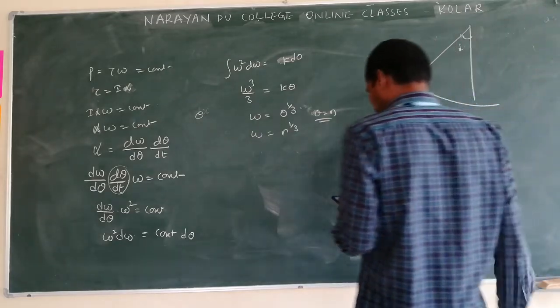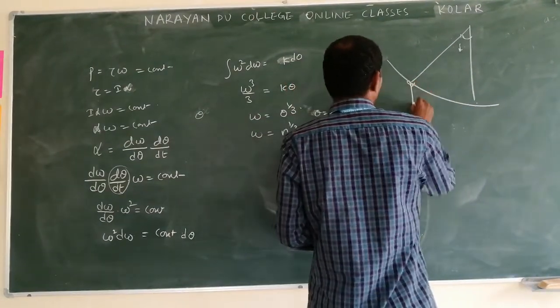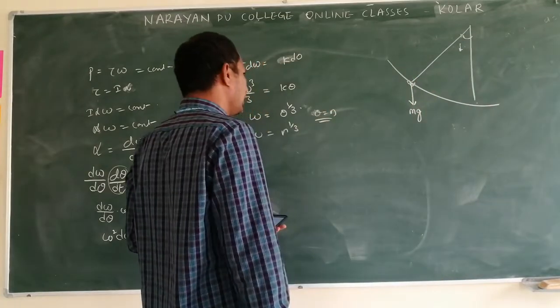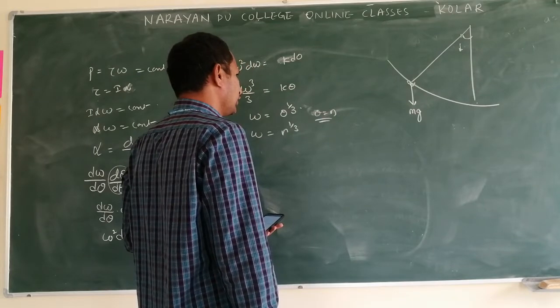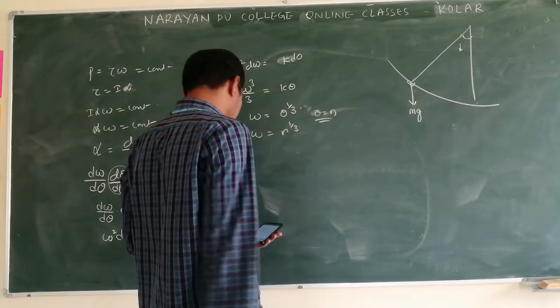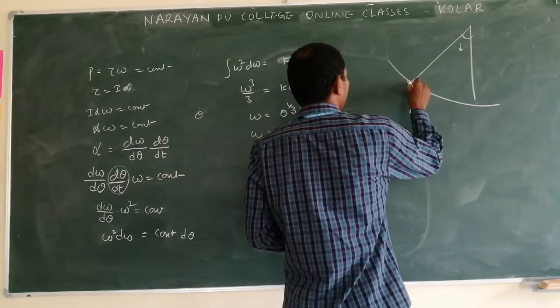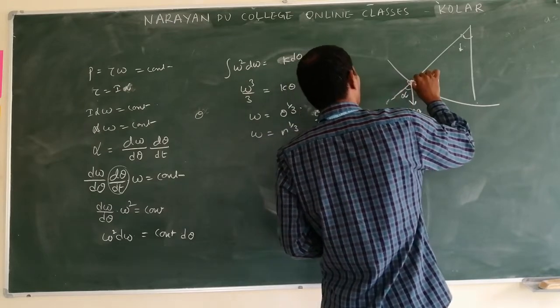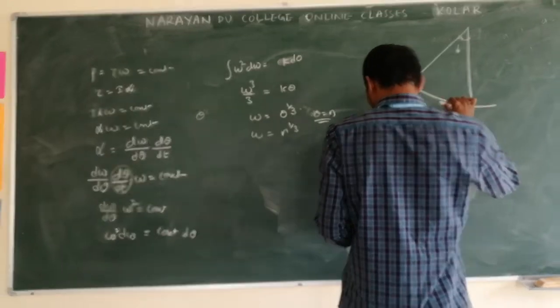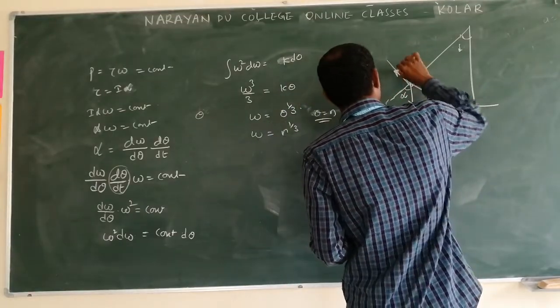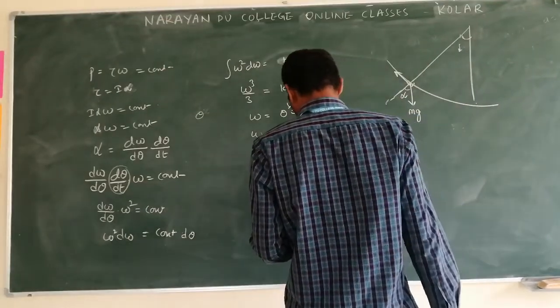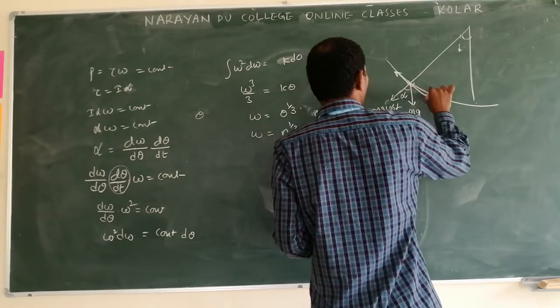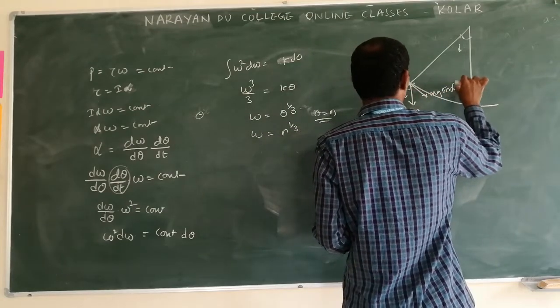Here, so here mg - mg is the weight of the insect. If we extend this line, this is the alpha. When it is moving up, what are the forces? This mg is resolved into two components - that is mg cos alpha, another one is mg sin alpha.